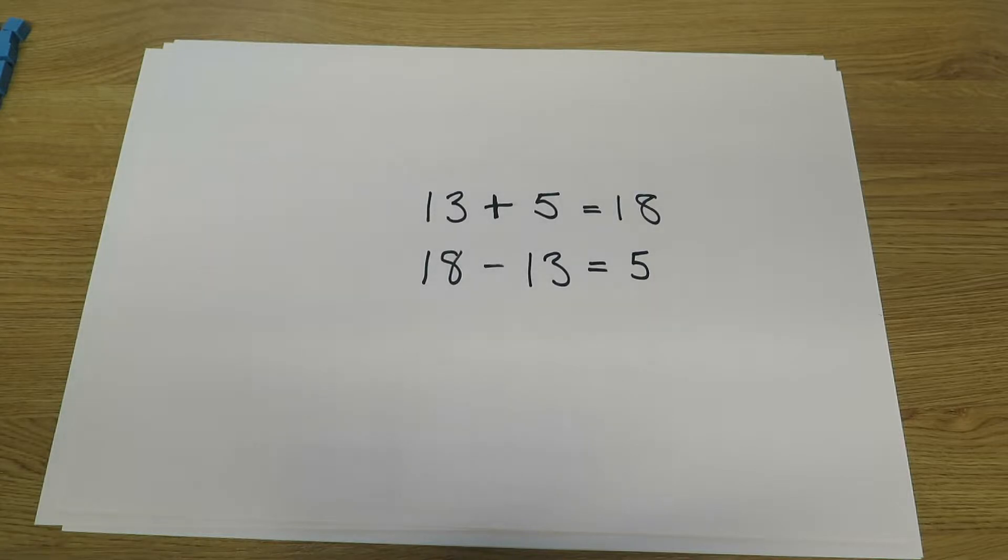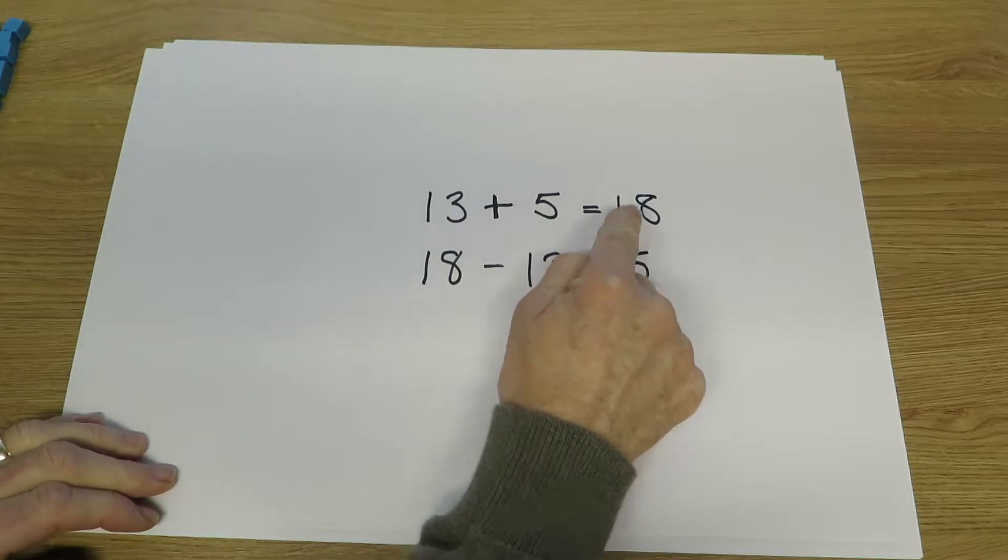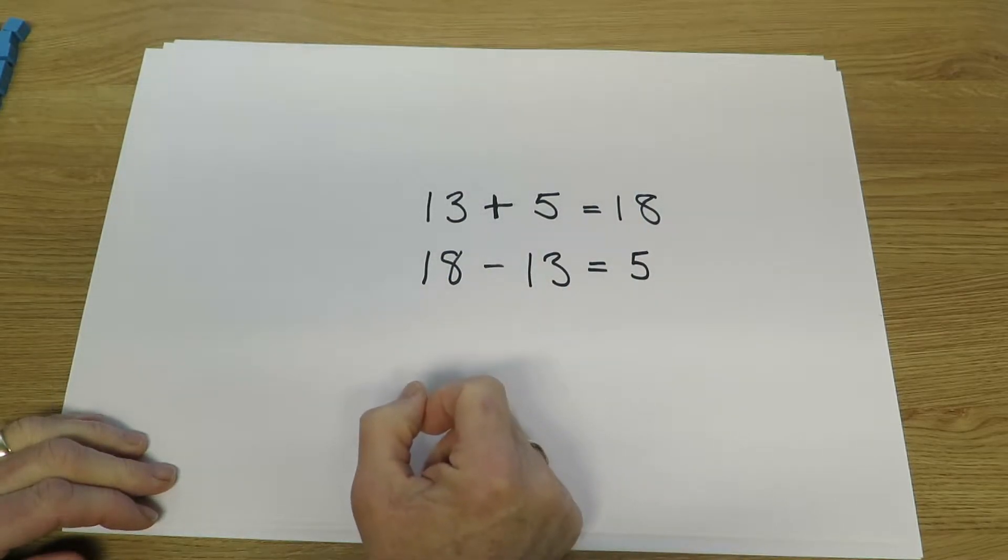In this video I'm looking at the process of addition, though of course addition and subtraction are closely related because subtraction is the inverse of addition. For example, because 13 add 5 is 18, then 18 take away 13 must be 5.